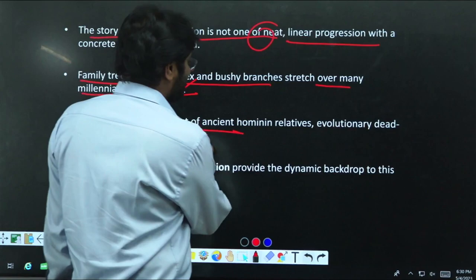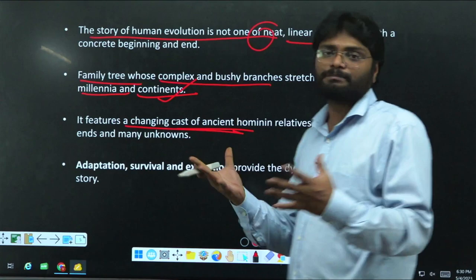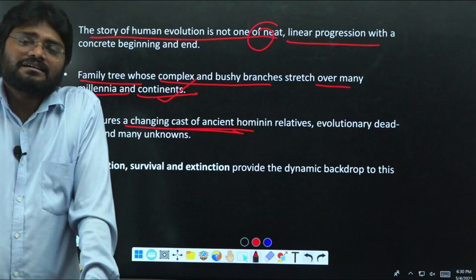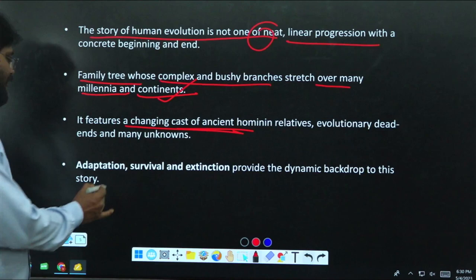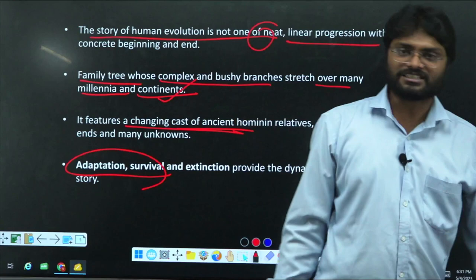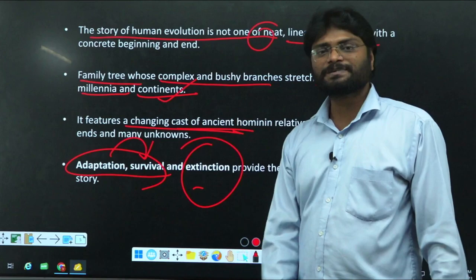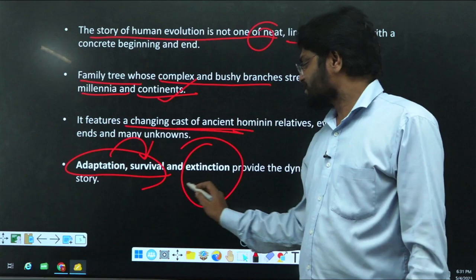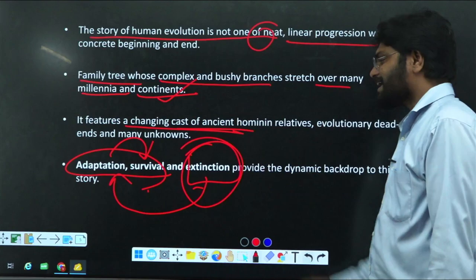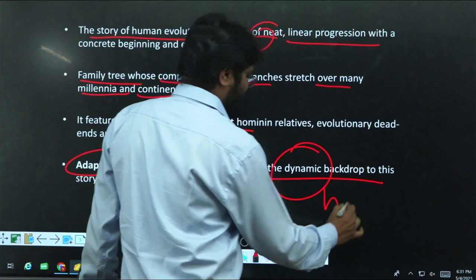Discovering new fossils makes us change these branches and reconstruct that tree. Why do many species within the same genus end? Adaptation and survival. Whatever is better adapted for changed environmental conditions will survive more. Whatever species could not adapt well for changed climate — that is called natural selection — might go extinct. So adoption, survival, and extinction drive the dynamism of human evolution.